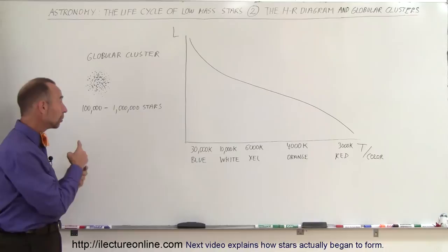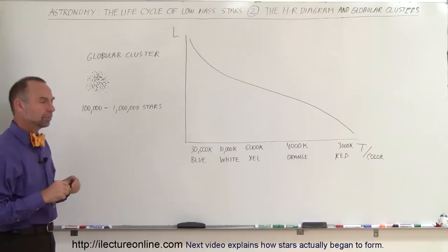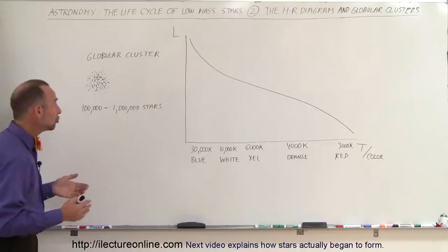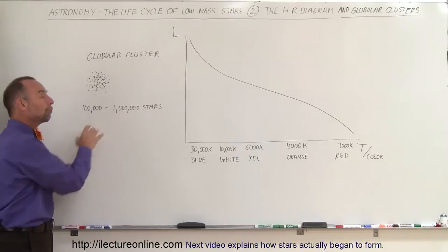These globular clusters are absolutely enormous. They're anywhere from 60 to 100 light-years across and contain as many as 100,000 to over a million stars, all clustered together.